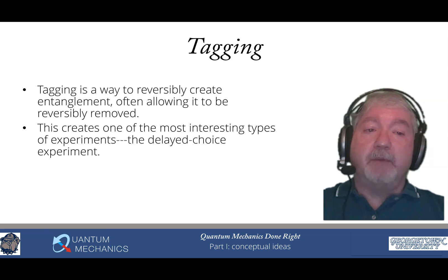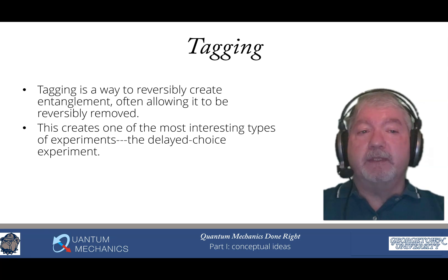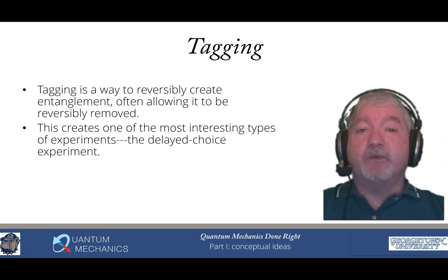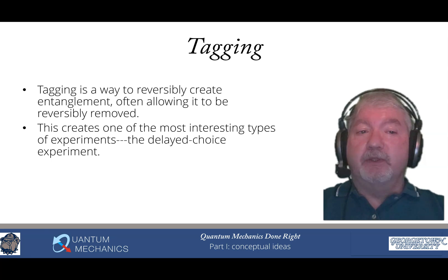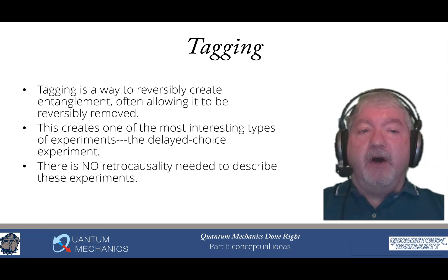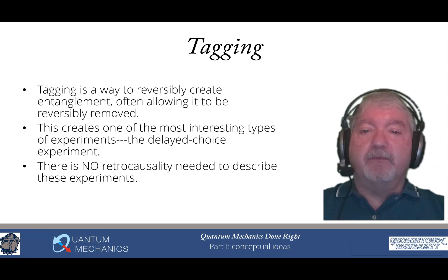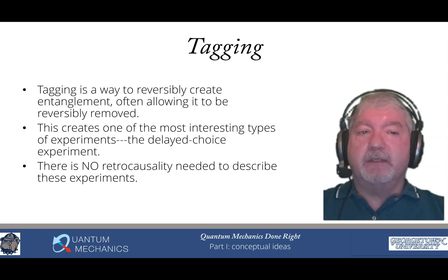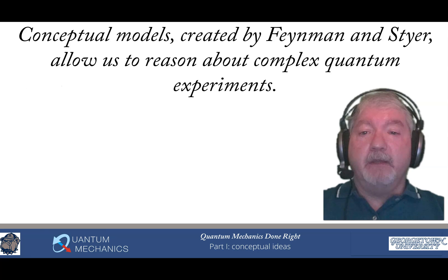The delayed choice experiment is where you change something in the experiment after the quanta has gone through the device — sometimes well after it's gone through the device — and yet it will change the outcome. Often if you look at videos on YouTube, they'll talk about retrocausality. There is no retrocausality needed to describe these experiments. Anyone who tells you that doesn't know what they're talking about.